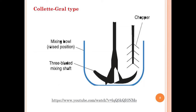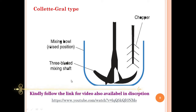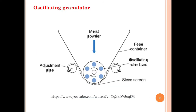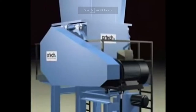The Collate Graal type granulator is similar to the Diosana granulator, with the key difference that the three-bladed impeller is replaced by a three-bladed mixing shaft, and the chopper is oriented in the vertical direction. If the Collate Graal or Diosana granulator cannot produce granules of the required size, we use the oscillating granulator to convert the wet mass into uniform-sized granules.